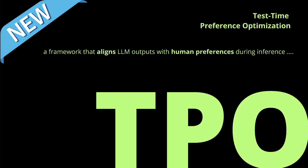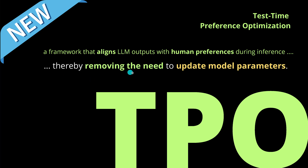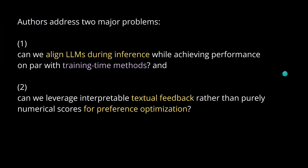So I found this paper. It is a new framework that aligns LLM outputs with human preferences during inference, thereby removing the need to update the model parameters. And I thought, this is it. This is what I'm looking for. I want to show you this new methodology.